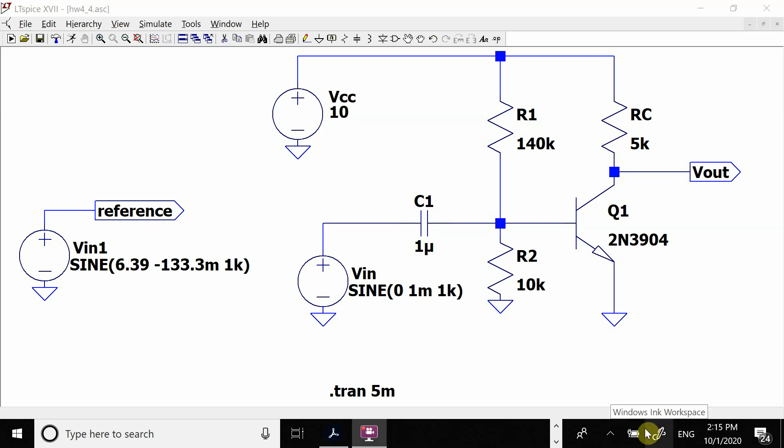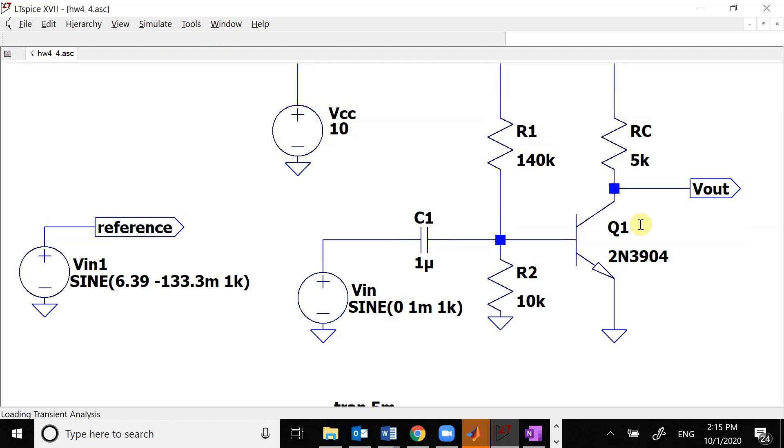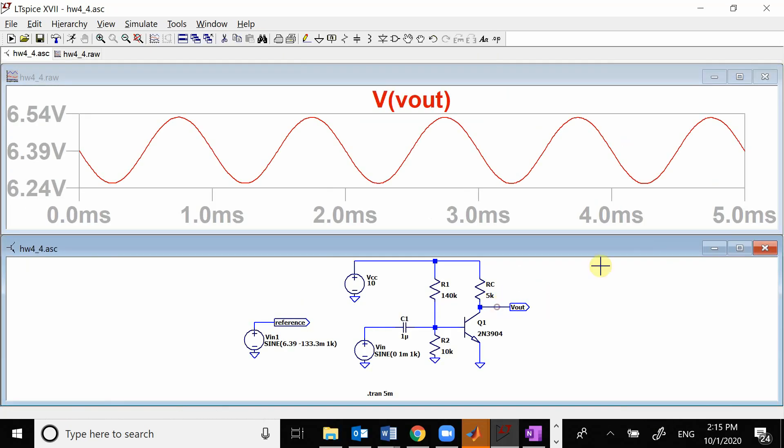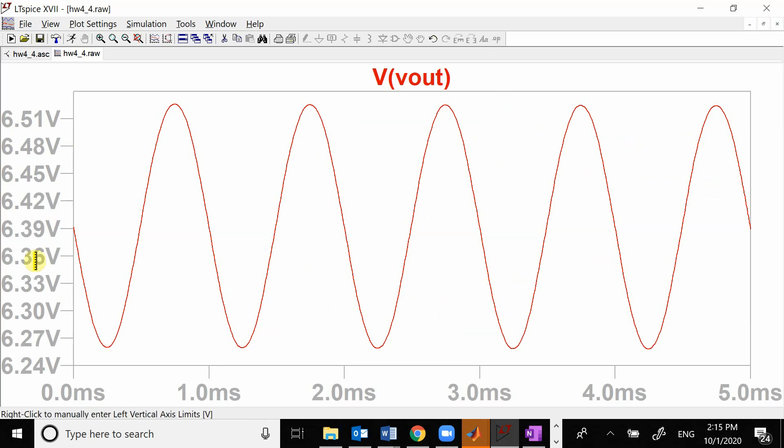We want to look at clipping of a signal. So I just made a standard common emitter amplifier here and we want to look at the output and you see it has a nice sinusoidal signal kind of centered right around here.